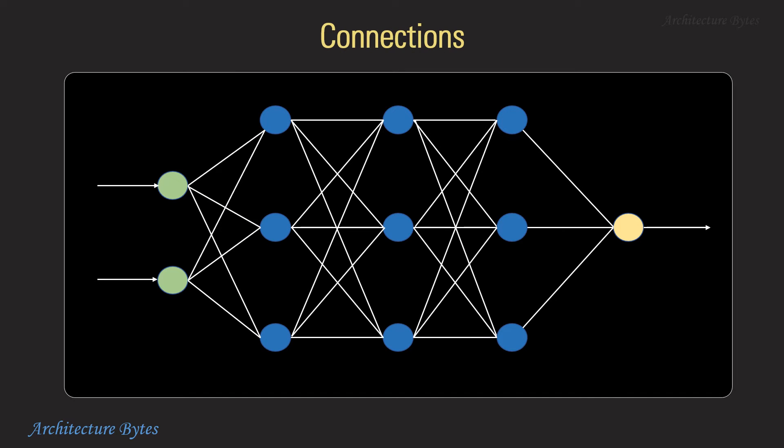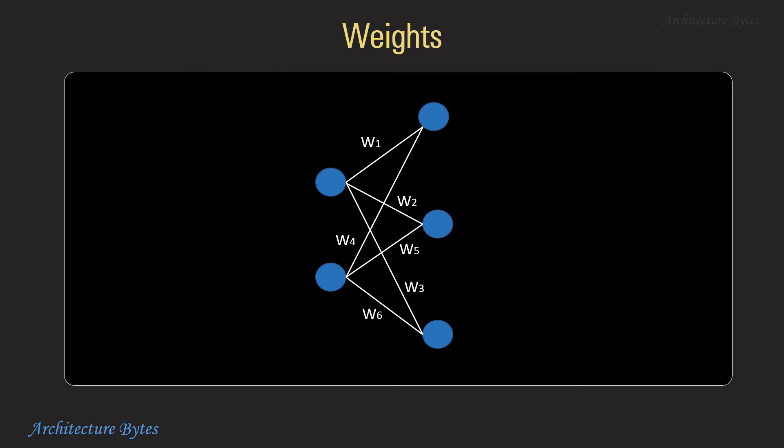They are connected to other neurons through connections. Each connection has an associated weight that determines the strength of the connection. During training, these weights are adjusted to optimize the network's performance.